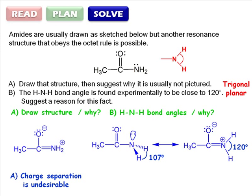So the experimentally determined angle is close to 120 degrees because the resonance structure on the right is making a significant contribution to the observed geometry.